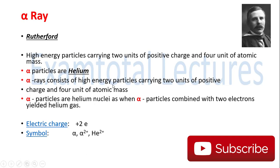Alpha particles consist of high energy particles carrying two units of positive charge and four units of atomic mass, and these particles are helium nuclei — when they combine with two electrons they form helium gas. The electric charge is two positive and the symbol is alpha (He²⁺). Alpha can also be written as helium-two-positive because on getting back two electrons it gives helium nuclei, as seen by Rutherford.